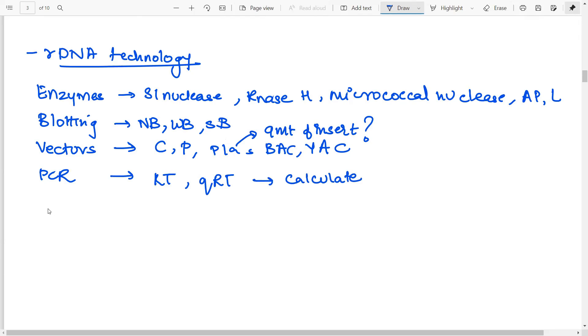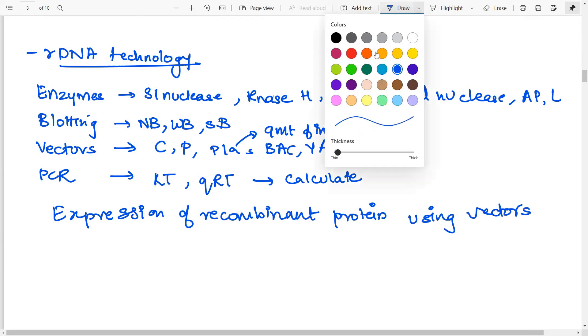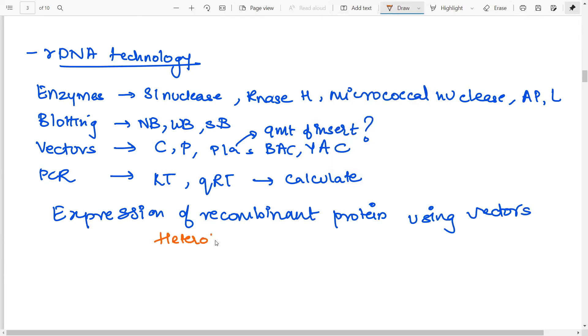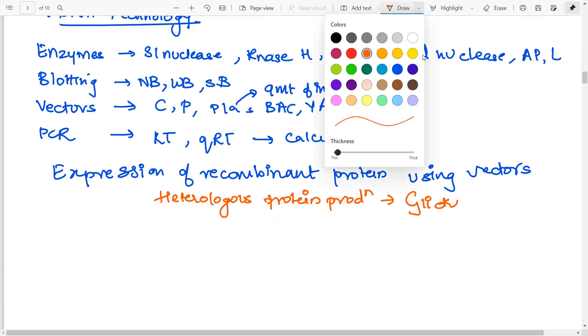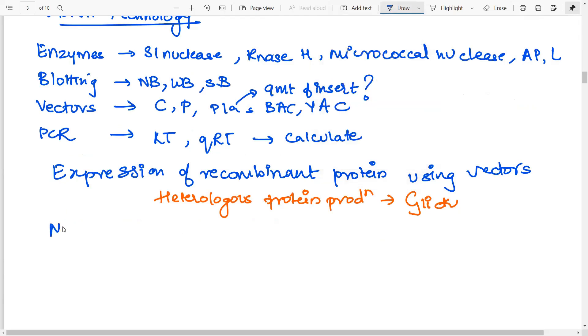Then the next thing that is expression of recombinant protein using vectors. Now, this is one avenue where a lot of questions have been asked. And how to actually study for this part, you can refer to many of the questions can be answered if you know that chapter. So, that is the chapter on heterologous protein production in the book Glick. If you go through this chapter, you will understand what are the modifications need to be done if you are expressing a eukaryotic gene in the prokaryote, why certain experiments fail, etc. So, all those informations you will get from this chapter.